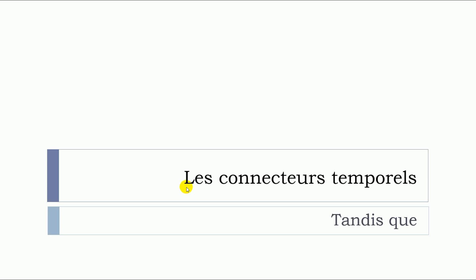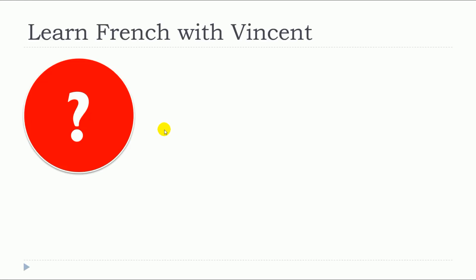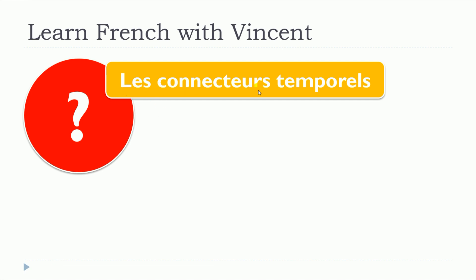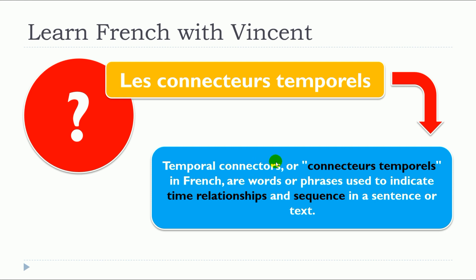In this lesson, we will see together les connecteurs temporels, but more precisely, we will see tandis que. So the main question is, what are les connecteurs temporels? Temporal connectors, or connecteurs temporels in French, are words or phrases used to indicate time relationships and sequence in a sentence or a text.